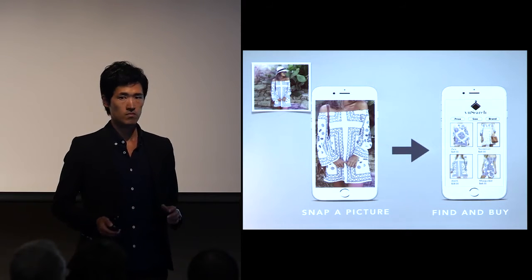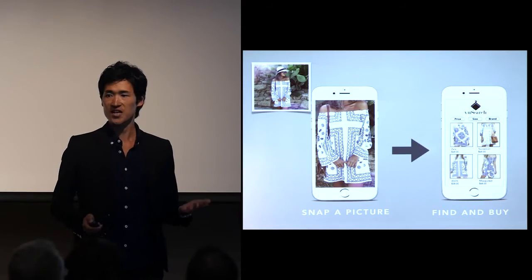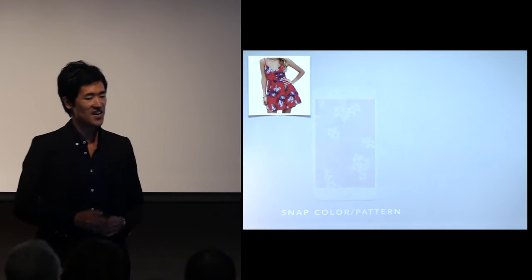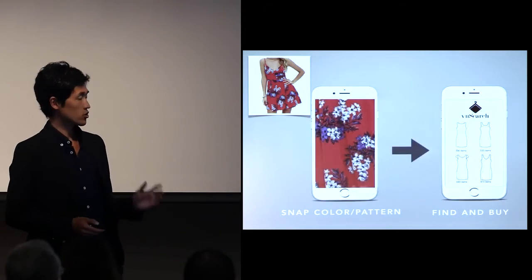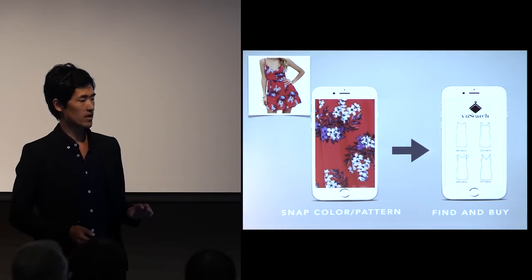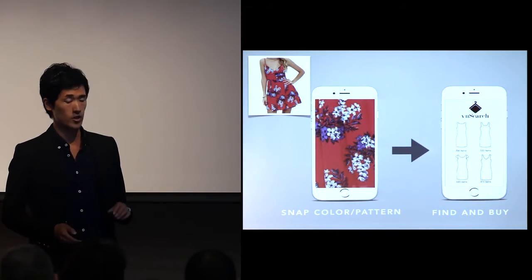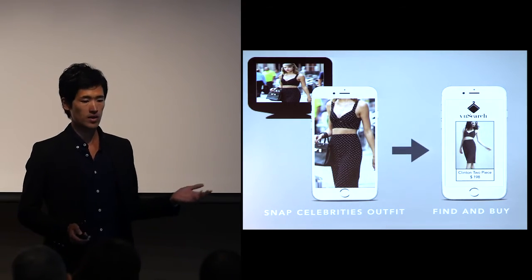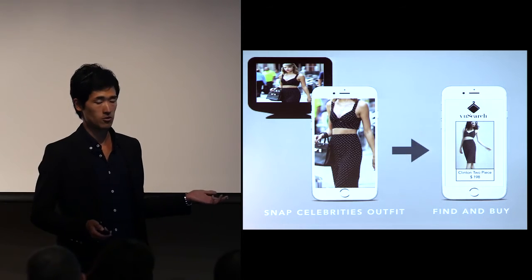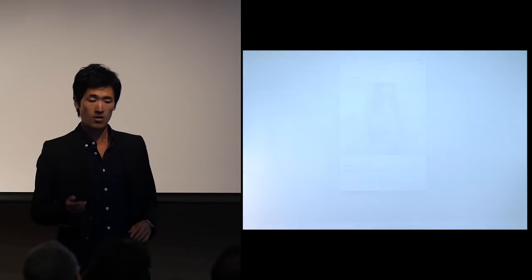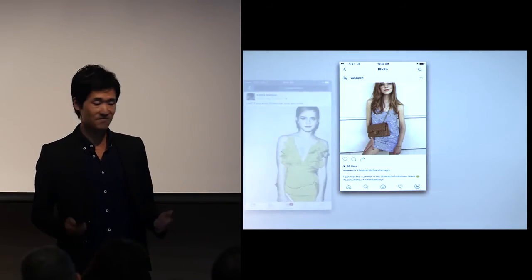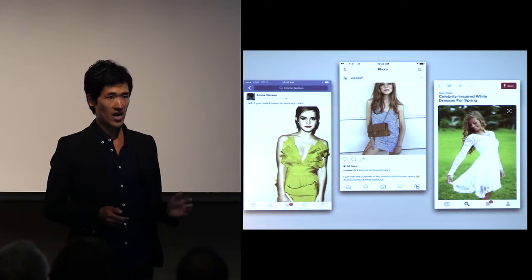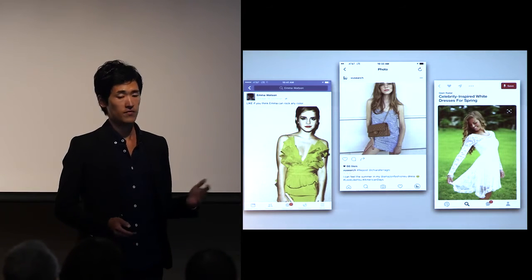It's just that easy. And yes, this is Shazam for fashion. You can also start the search from a pattern or color of fabric instead of a product image. Now with ViewSearch, you can find what Taylor Swift is wearing on TV shows. What's even more — you can find any fashion item on social media with ViewSearch.